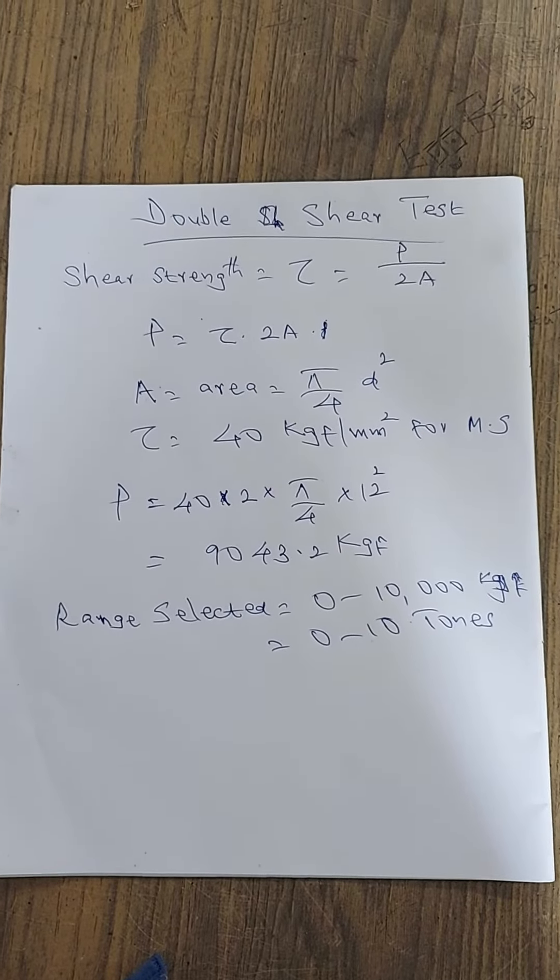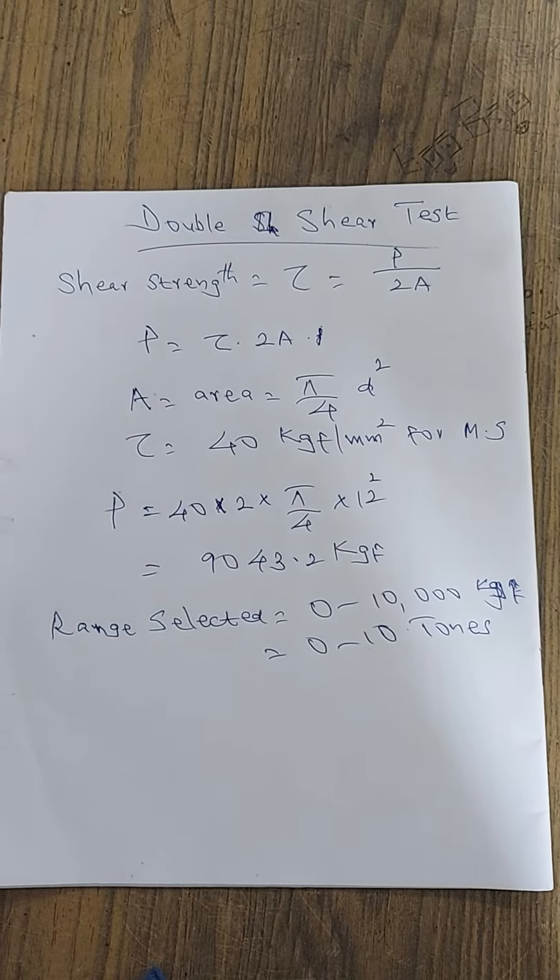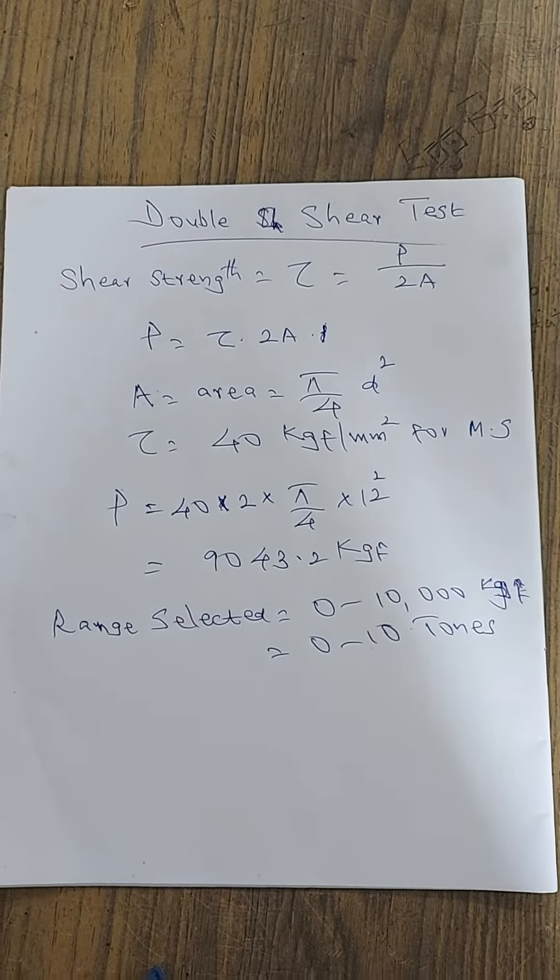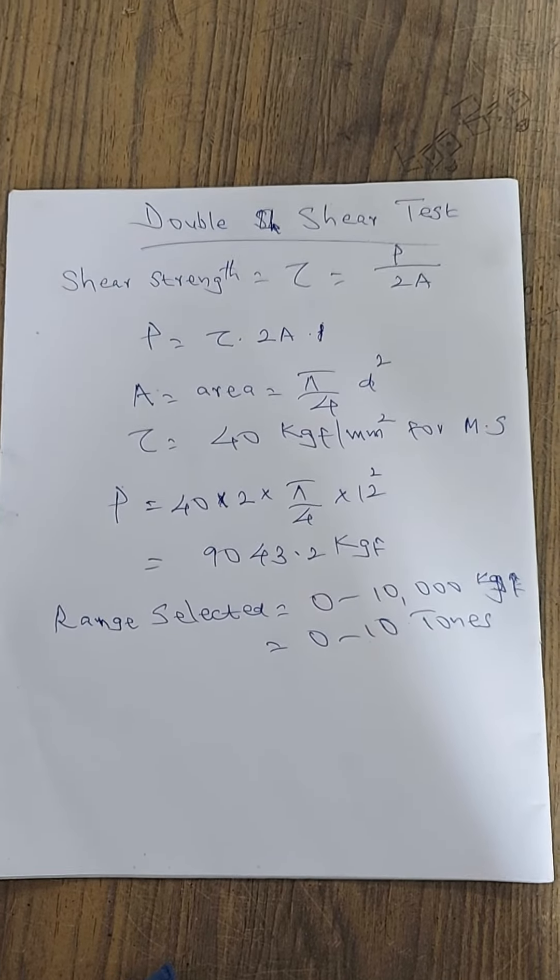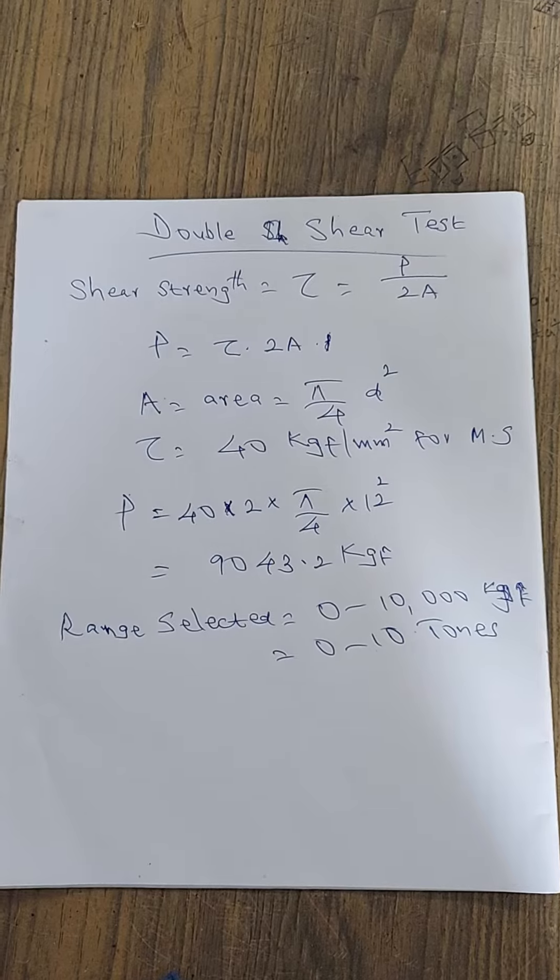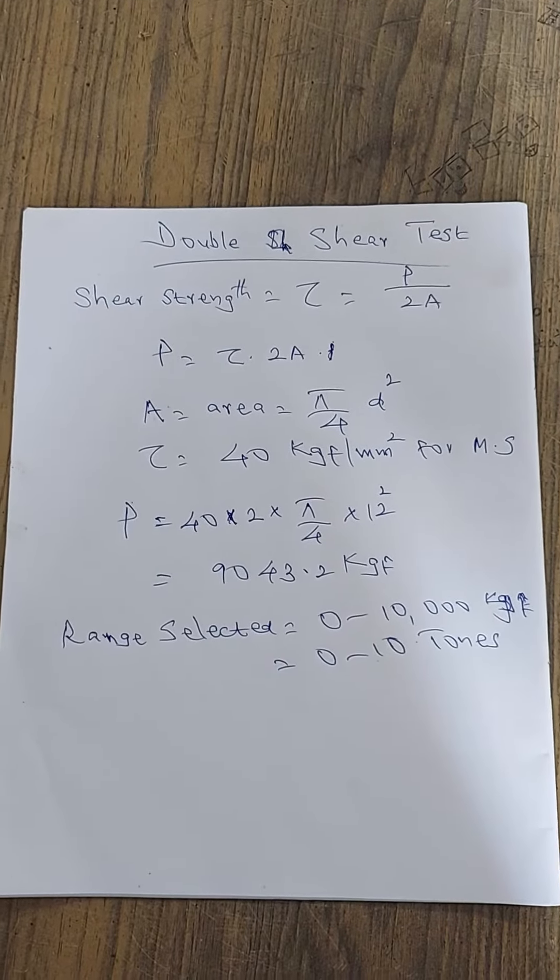The equation for determining the shear strength after conducting the double shear test is shear strength tau equals P by 2A, where P is the load at which the failure of the specimen occurs and A is the area of the specimen.